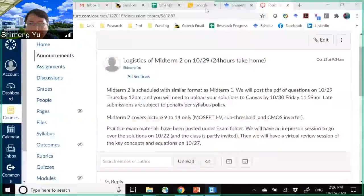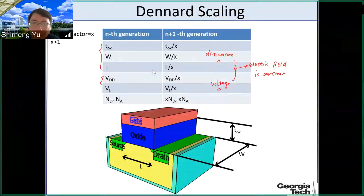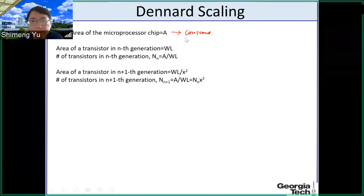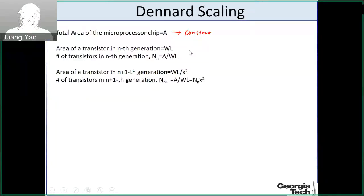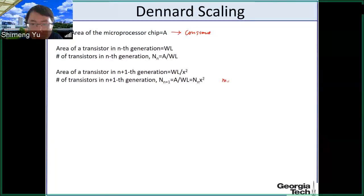So now we are on the Dennard scaling page. If the line is flipped, this is a constant. The total chip area is constant, but the number of transistors becomes x squared, so basically you can have more transistors on this chip.